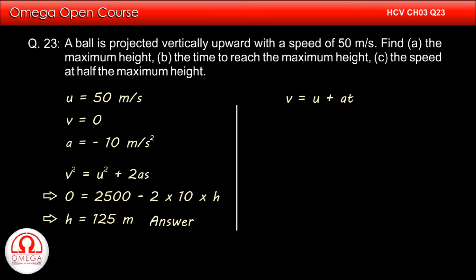From the first equation of Newton's equation of motion, we have v = u + at. Putting the values, we get 0 = 50 - 10 × t. Solving, we get t = 5 seconds. Thus the ball takes 5 seconds to reach the maximum height. This is the answer to part B of the question.